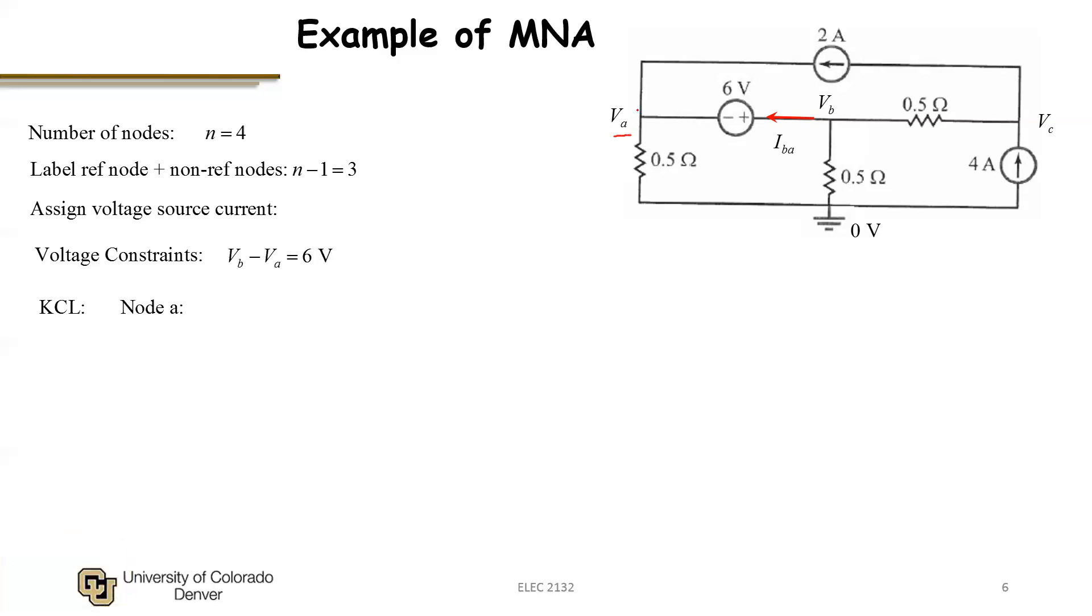So at node A, I have three branches. Now I'm going to enforce that the net current flowing out of this node in these three branches sums to zero. But now even though this branch to the right contains a voltage source, I now have a current assigned to that branch. So as I write down my KCL, of course I can write KCL flowing out of the upper branch, which is minus 2 amps. But the current flowing out into the 6-volt source, I now call minus I_BA. So this is flowing opposite of the direction of I_BA, plus the current flowing through the half-ohm resistor is V_A minus 0 over 0.5.